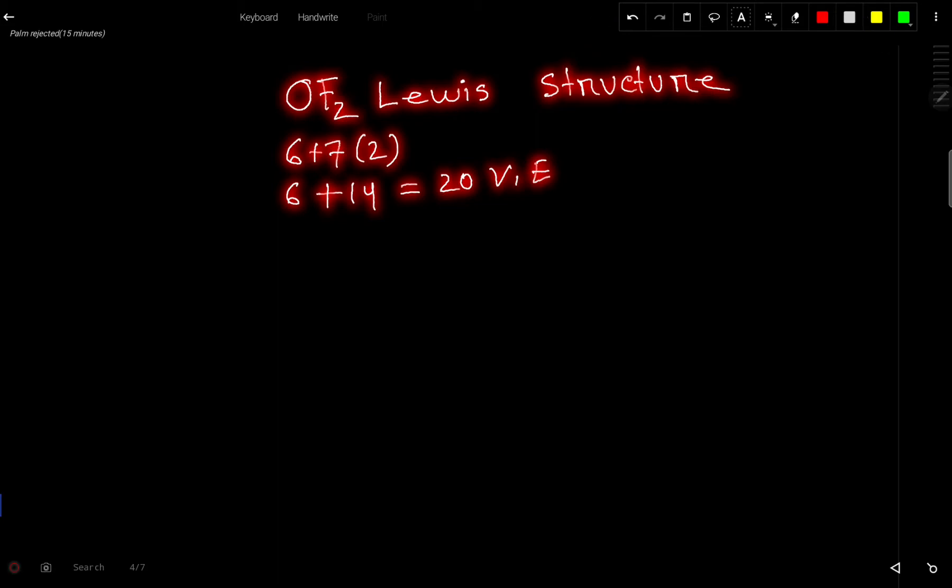Look, the central atom will be oxygen because it has the highest capacity for making bonds, or it is the least electronegative atom. That is why it is the central atom. So fluorine is the outer atom.